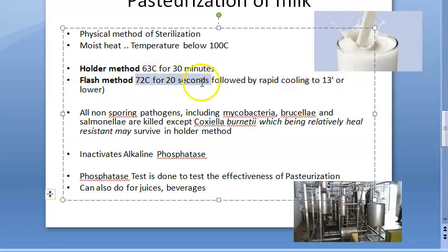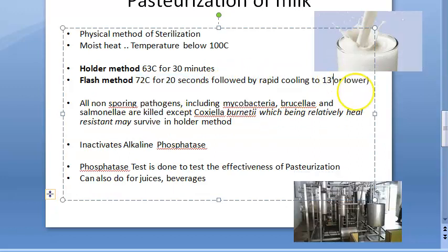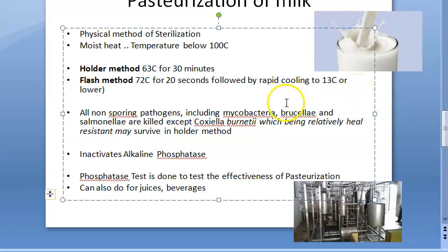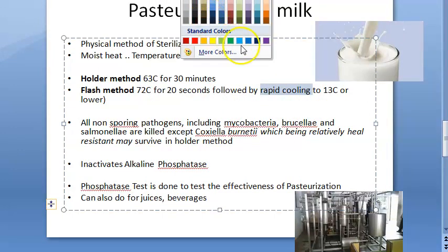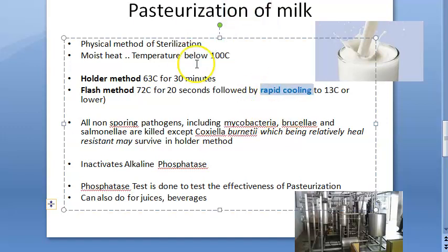In the flash method, 72 degrees centigrade is maintained for only 20 seconds, and then rapid cooling must be done to 13 degrees centigrade or lower. The word 'rapid' is important — do not let it cool slowly. Also note: 13 degrees centigrade is a positive temperature, not negative. Do not make that mistake in your exam.